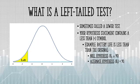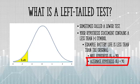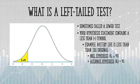For example, let's say you think those new batteries have a lower lifespan than the original. As your hypothesis, that's the alternate hypothesis, has a less than symbol, it's a left-tailed test.